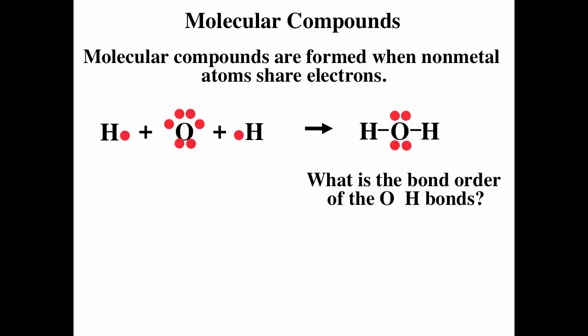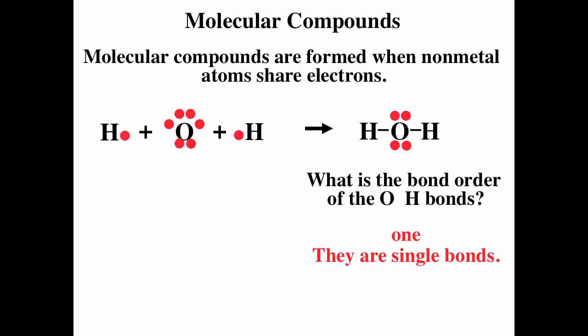You could be asked: what is the bond order for the oxygen-hydrogen bonds? We have two oxygen-hydrogen bonds, but we look at one at a time. Each has one pair of electrons being shared, so the bond order is one — it's a single bond.